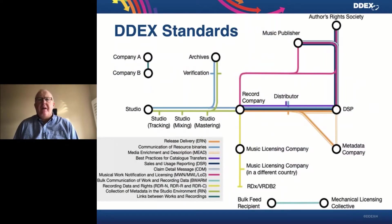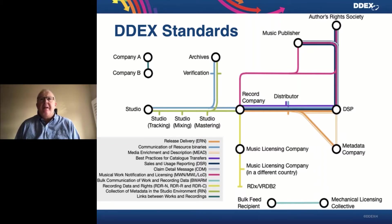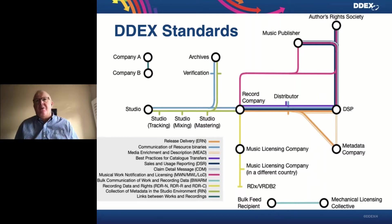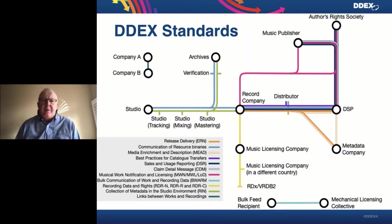We now have quite a number of families of standards. The main tube map shows the principal types of organizations that exist in the industry and the different types of transactions each of them are doing, with a separate standard for each. That might suggest all the standards are different, but that is far from the case — they all use the same sorts of building blocks. The data may be in a different order, but there is a lot of commonality within and across all of the standards.